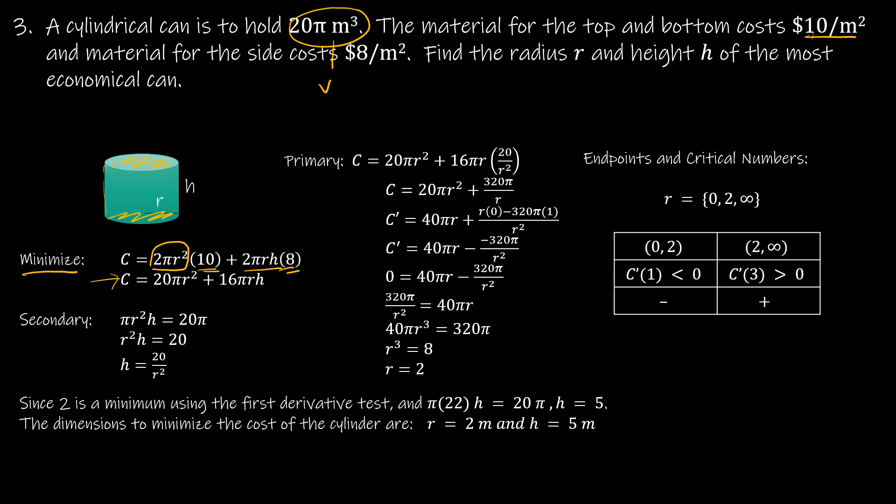For my secondary, I'm given the 20π meters cubed, and that is for volume. So how do I find the volume? I take πr²h, and notice I put that equal to 20π. I divided each side by π and isolated the h. Then I take that primary equation, and I'm going to plug the h back into that primary equation, simplify, take the derivative, set it equal to 0 to find any possible critical values. In this case, r = 2 is the only one.